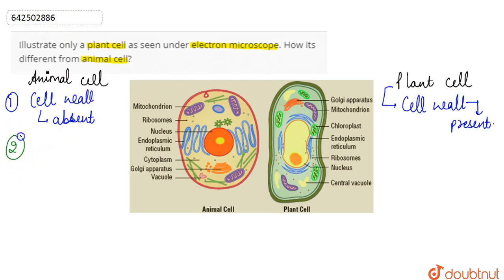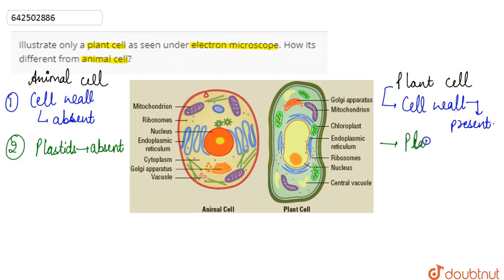The second difference is that in animal cell, plastids are absent. Plastids basically contain the pigment. Hence plastids are present in the plant cell and they are found to be absent in the animal cell.